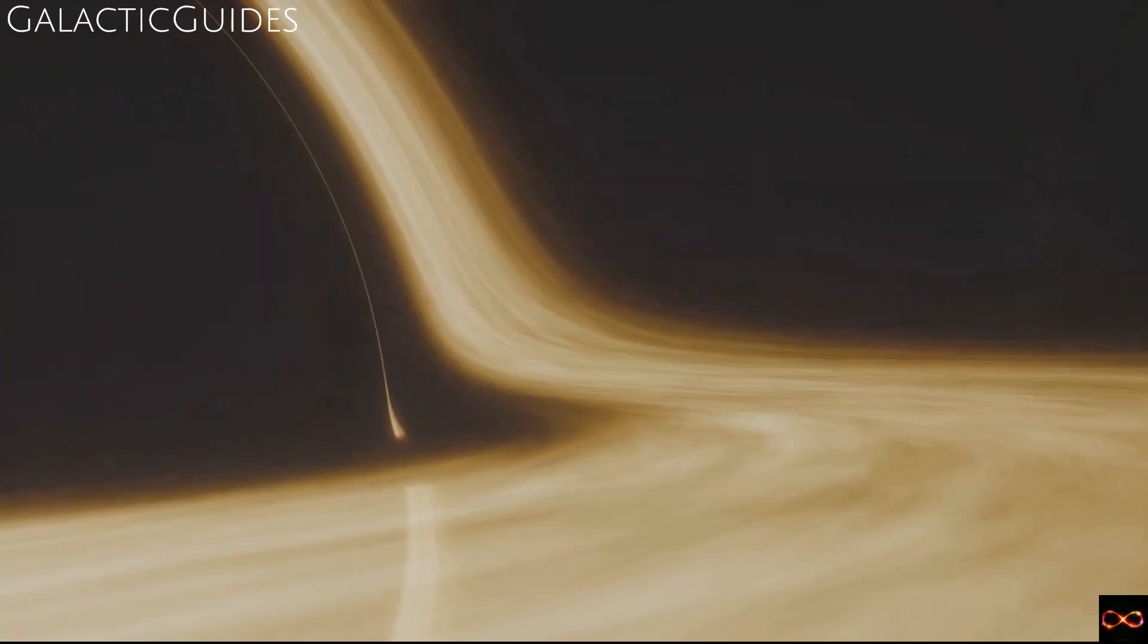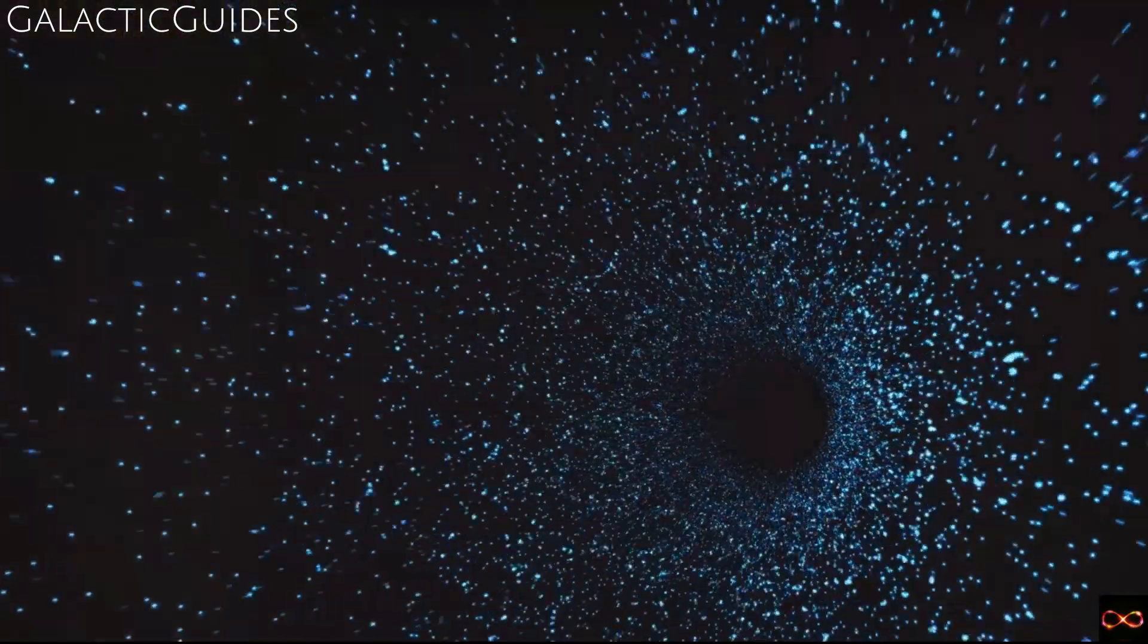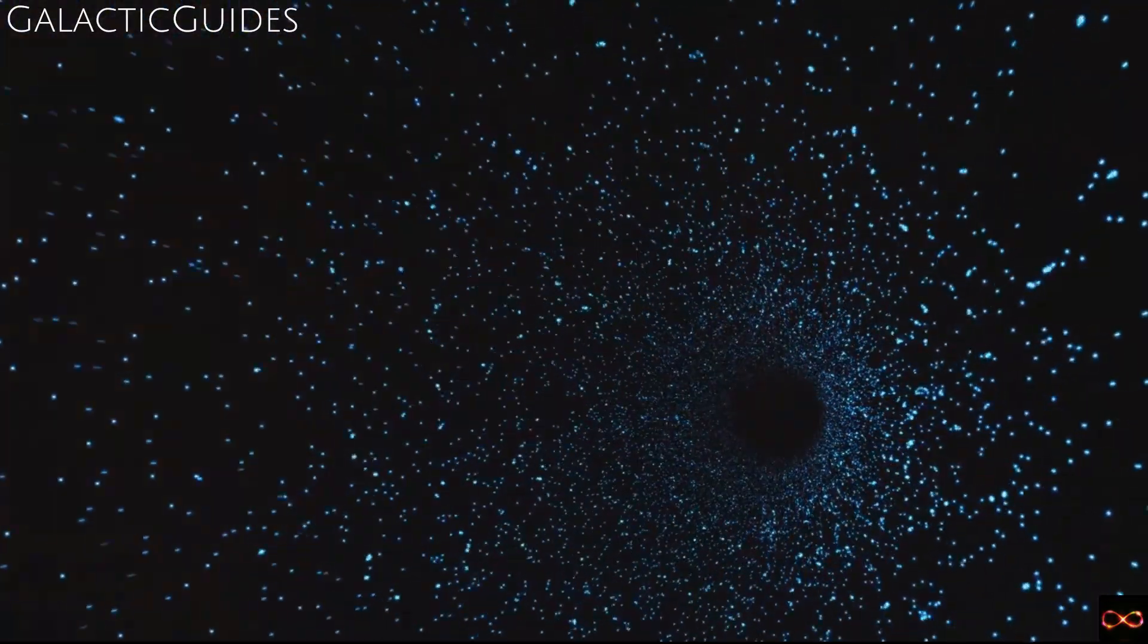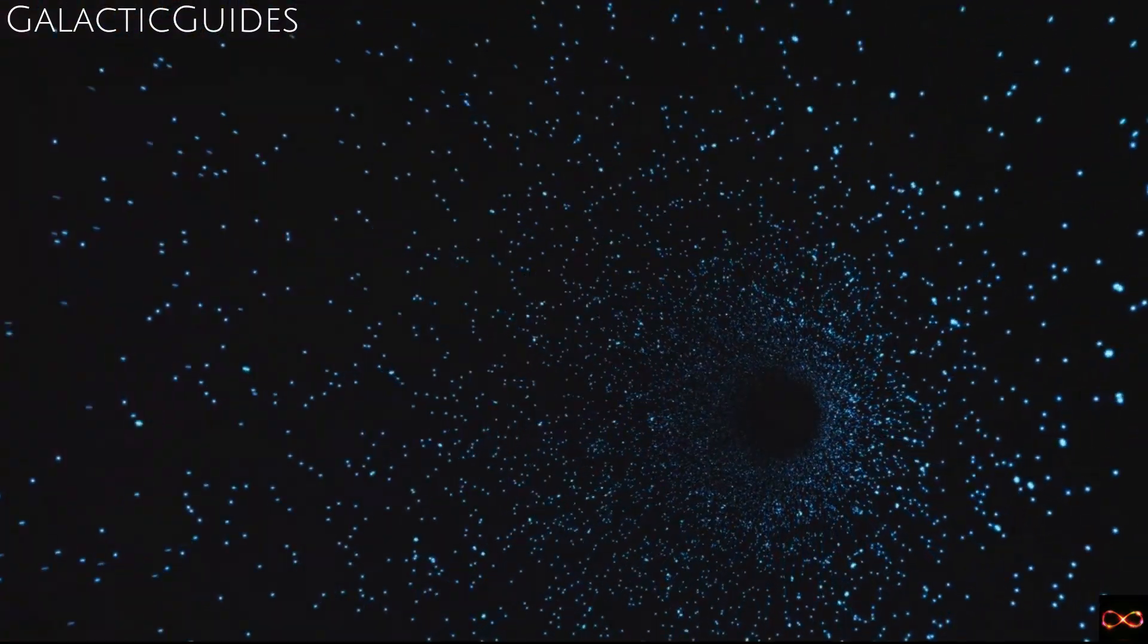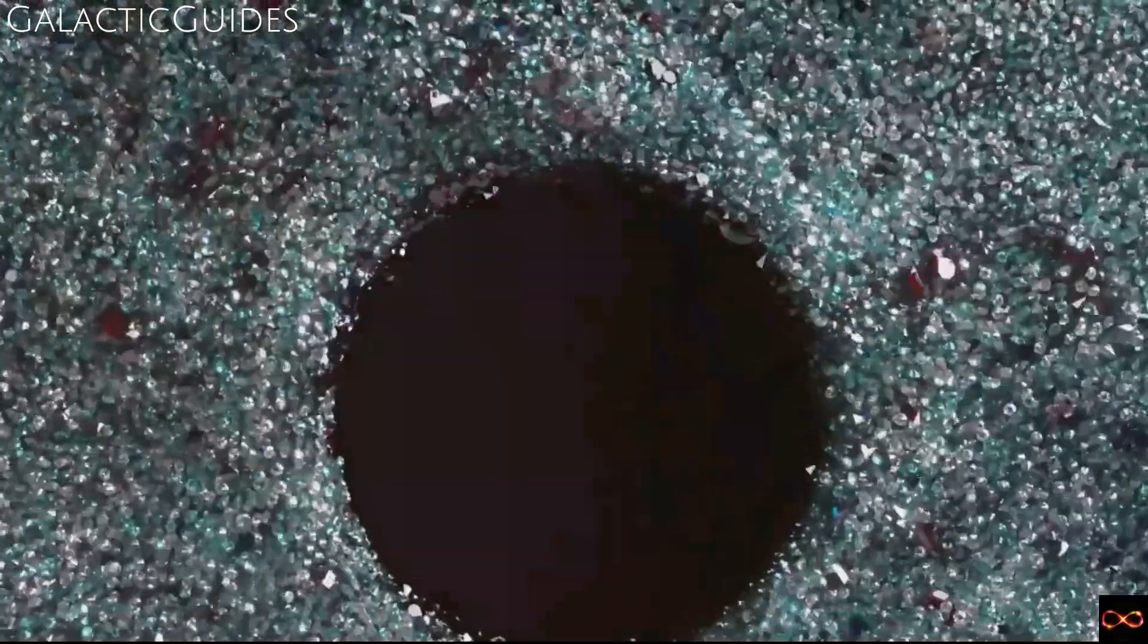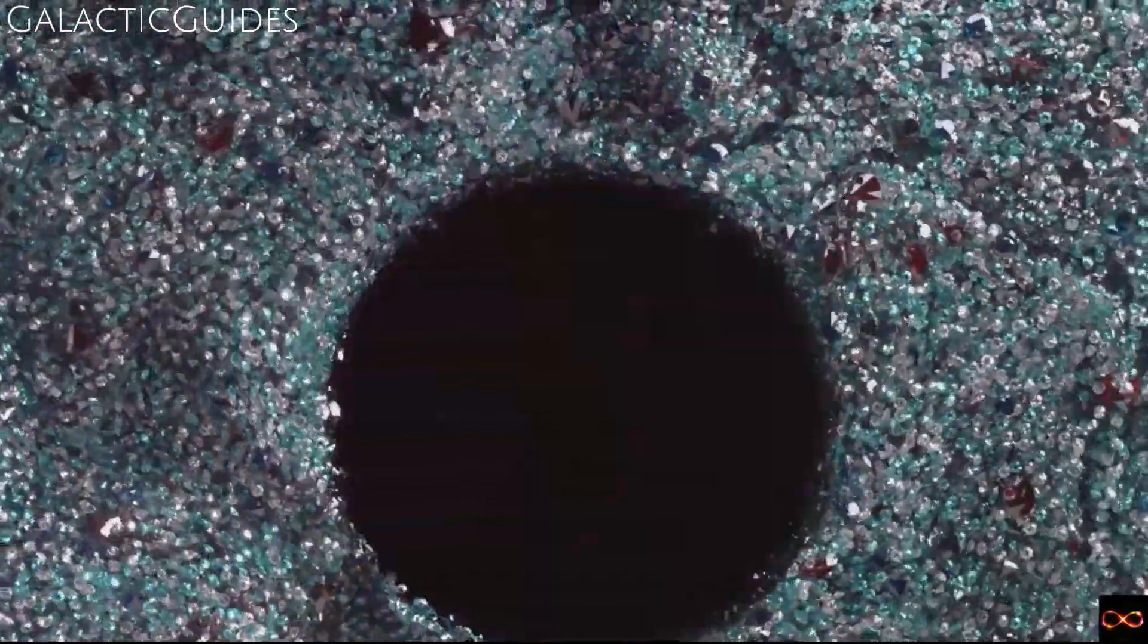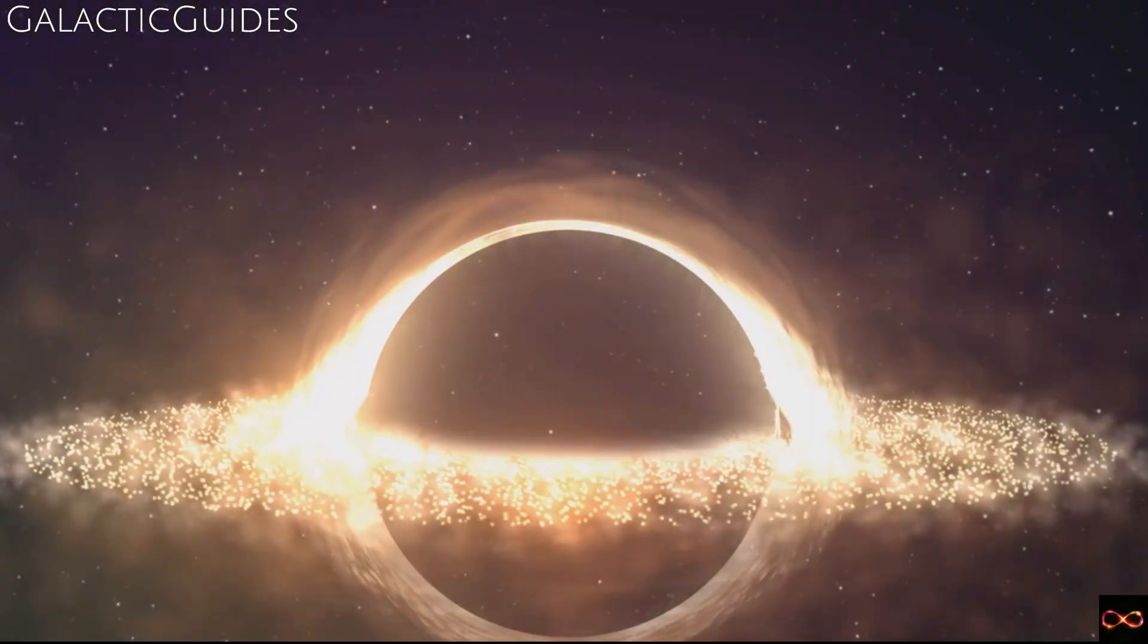Well, it's headed for the singularity. The singularity is the heart of a black hole. It's where the laws of physics as we know them break down. The gravitational pull is so strong that it warps and distorts space and time. In fact, the singularity is so extreme that it's hidden by the event horizon. This is what's known as the cosmic censorship hypothesis.